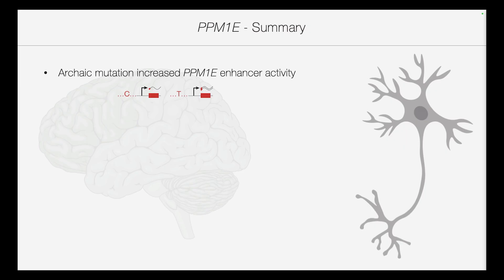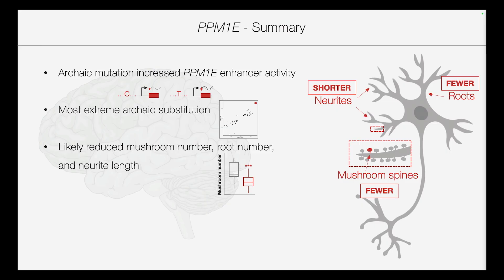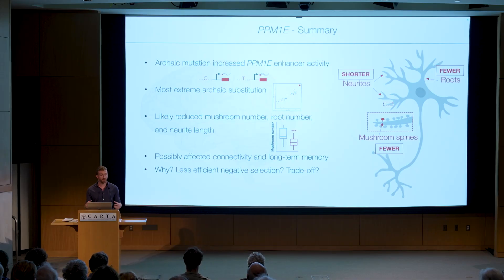To summarize PPM1E: we see an archaic mutation that increased PPM1E enhancer activity — in fact the most extreme archaic substitution in terms of its effect. It likely reduced mushroom spine number, root number, and neurite length in Neanderthals and Denisovans, and possibly affected connectivity and long-term memory. Why would such a mutation arise? It might reflect less efficient negative selection in Neanderthals and Denisovans due to their smaller population size, allowing deleterious mutations to reach fixation. But it might also represent a trade-off: fewer mushroom spines give way to more thin spines, which provide more flexibility to the brain — potentially a trade-off between long-term memory and increased cognitive flexibility.